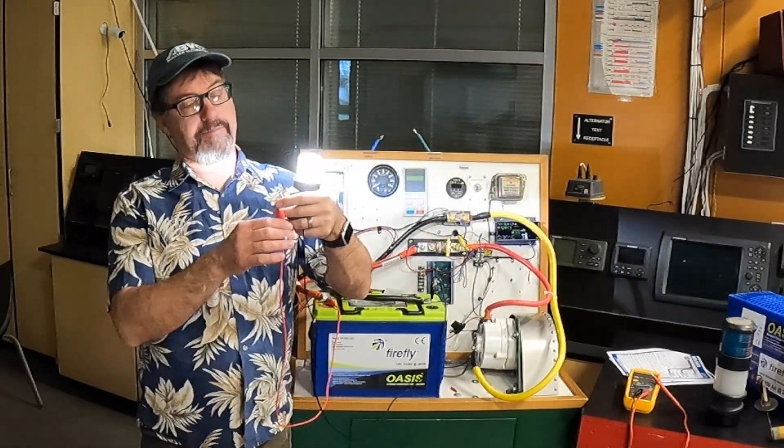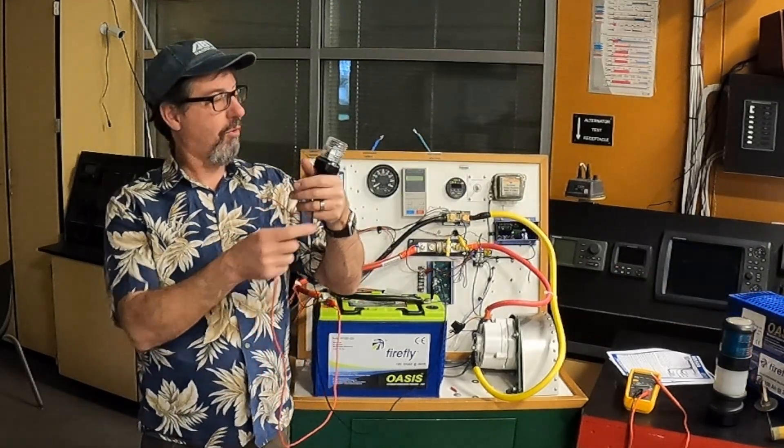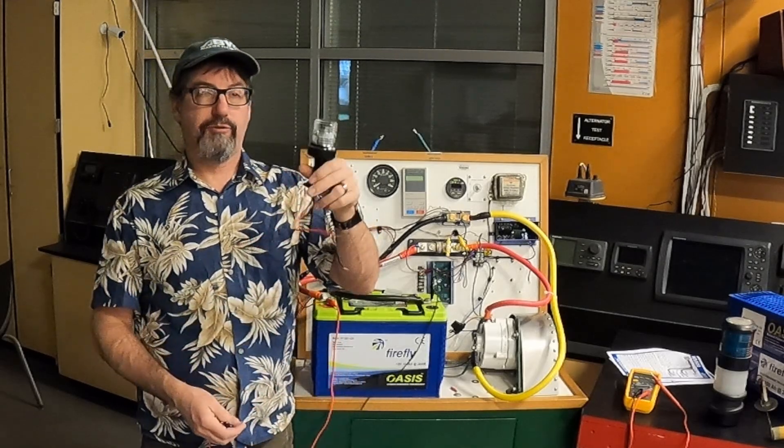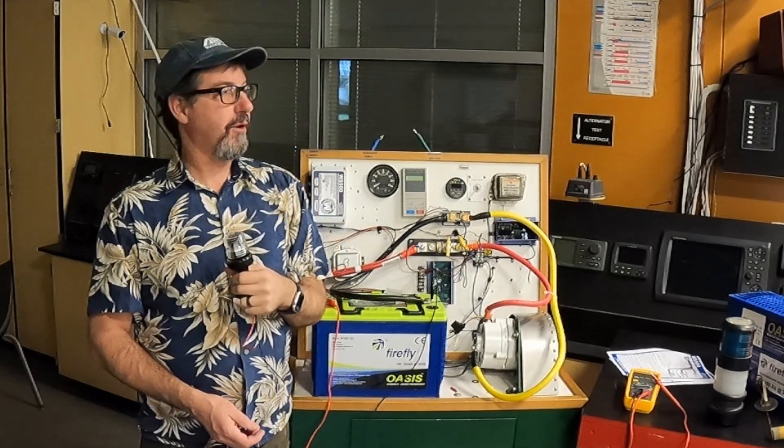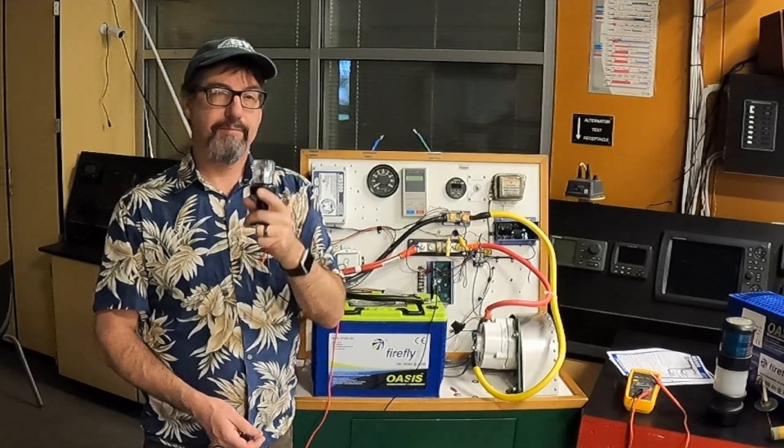Pretty cool little light, and about a quarter of the cost I think of Aqua Signal. So this is going to go on top of the mast on King's Pride, which sometime this spring will get set back up on the boat. Thanks for watching.